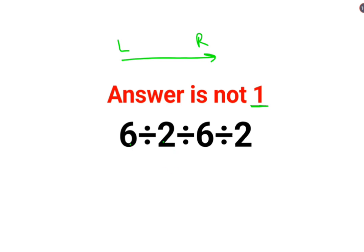So first we have 6 divided by 2 which is 3, divided by 6 divided by 2. Now don't start with this. That's absolutely incorrect. You have to again do this.